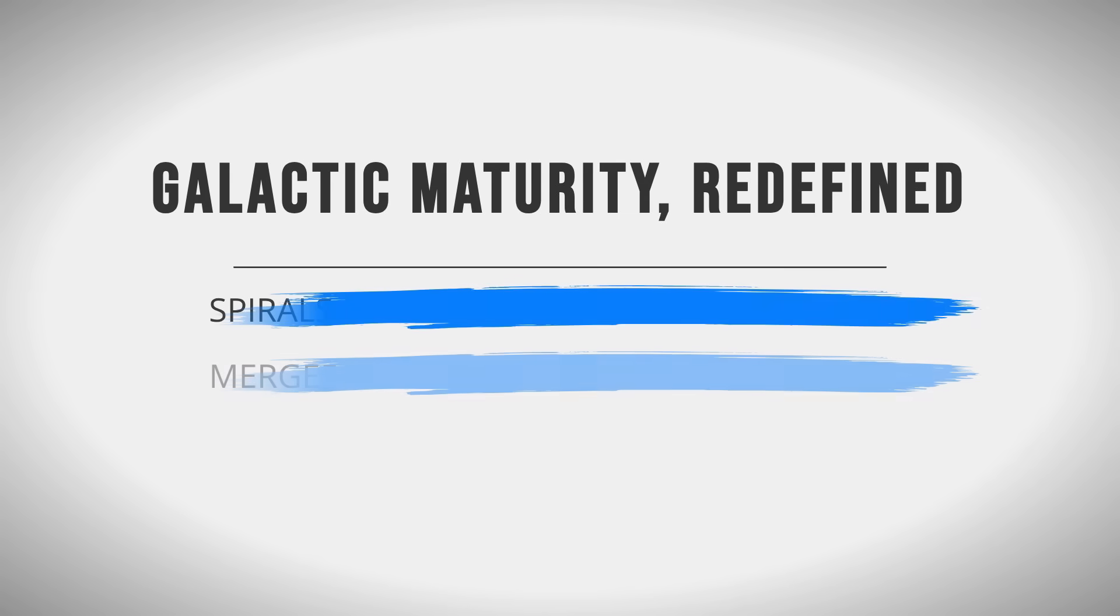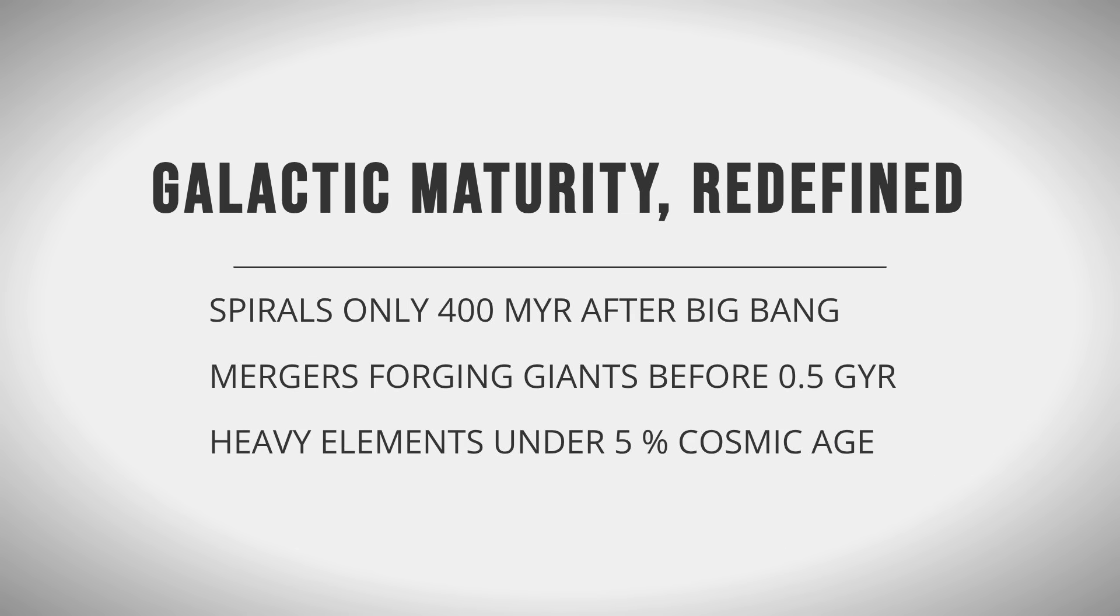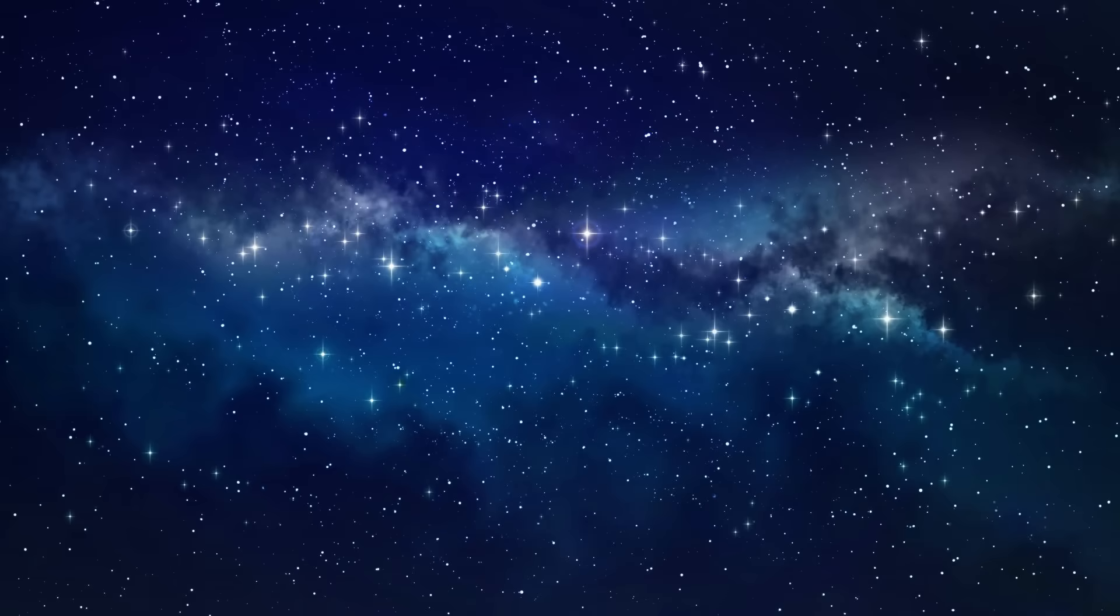JWST data show that mature spirals, massive mergers, and heavy elements appeared far earlier than existing models predicted. Yet, key questions remain.